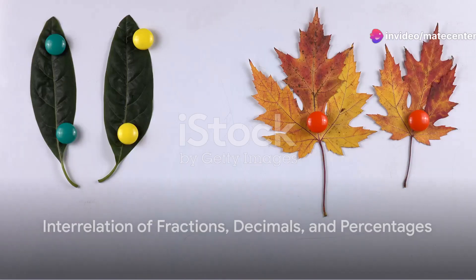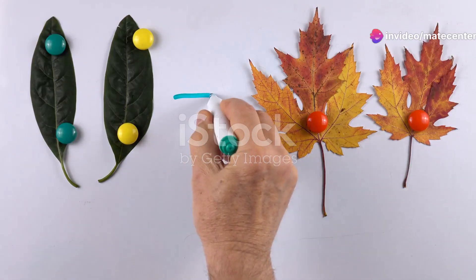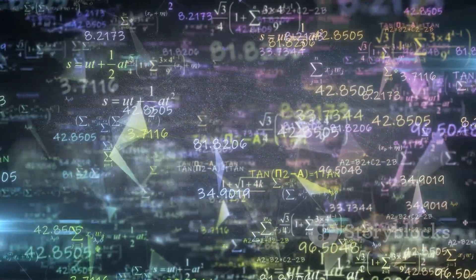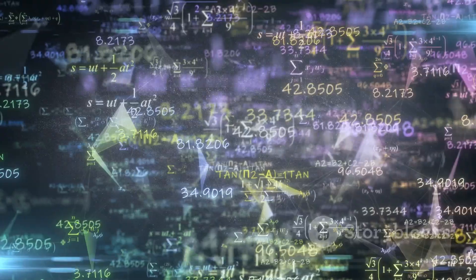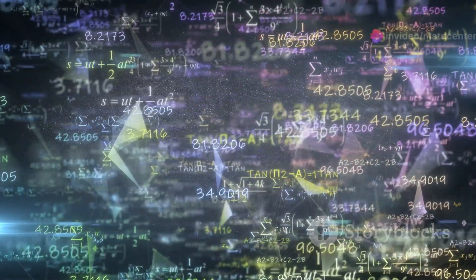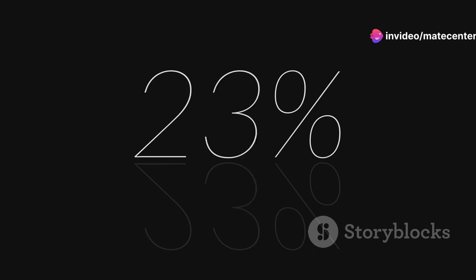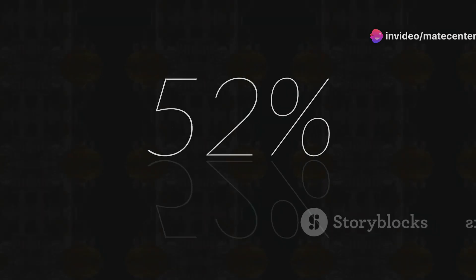So how do these three concepts interrelate? They're all different ways to express a part of a whole. A fraction can be converted to a decimal by dividing the numerator by the denominator. A decimal can be turned into a percentage by multiplying it by a hundred, and a percentage can be converted back into a fraction by putting it over a hundred.